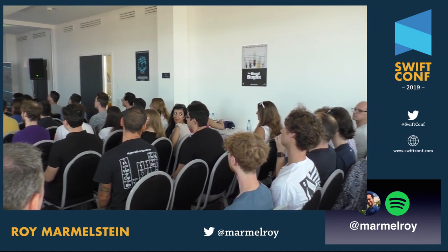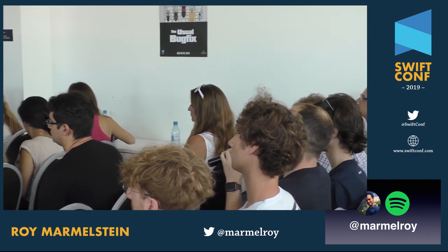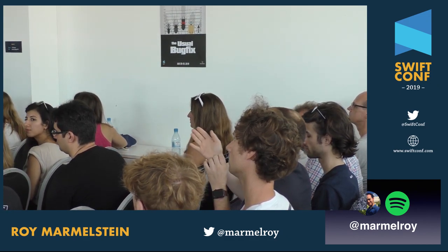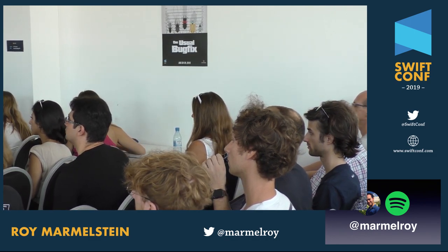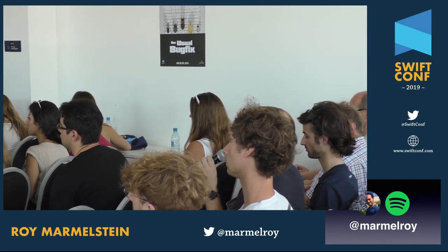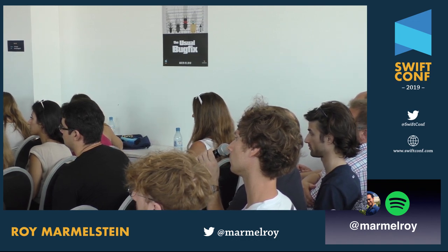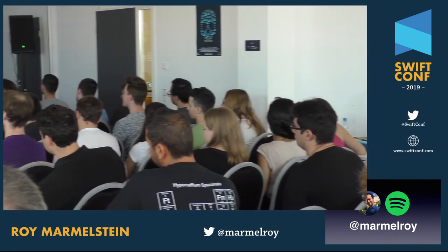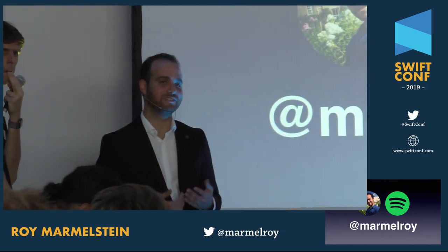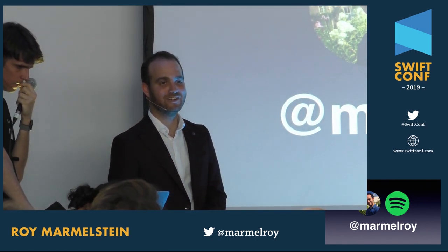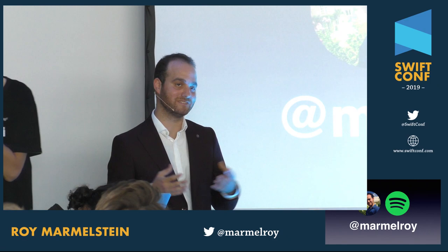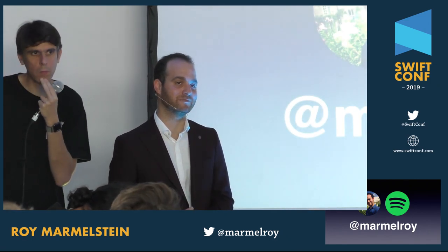Q: At our company, some best practices are part of the definition of done. Some colleagues want to automatically test these, but as you mentioned there's always an exception — so it's really hard to automate. Do you have a recommendation on whether we should automatically test these best practices? A: It depends on the best practice. You can always have exceptions. For something like never force unwrapping, exceptions are very few. For other rules, it may not make sense to automate if there's a very wide range of exceptions — evaluate it on a case-by-case basis.